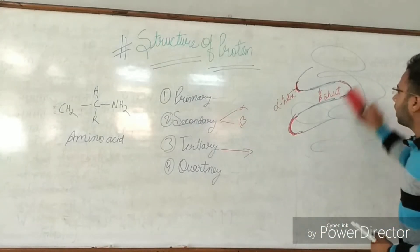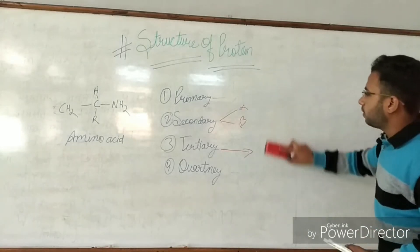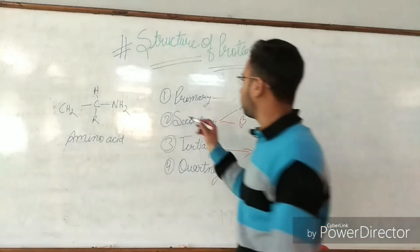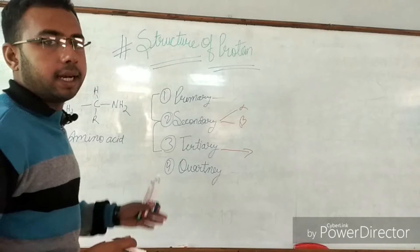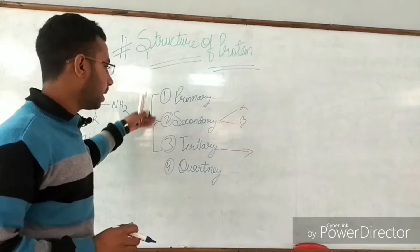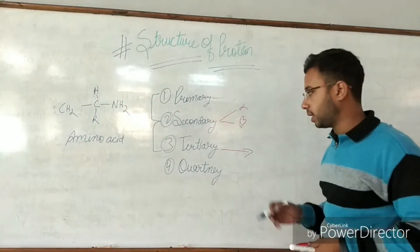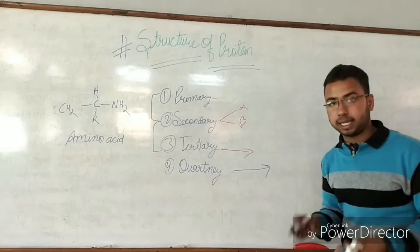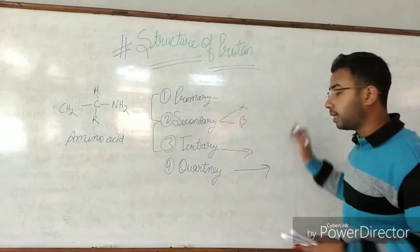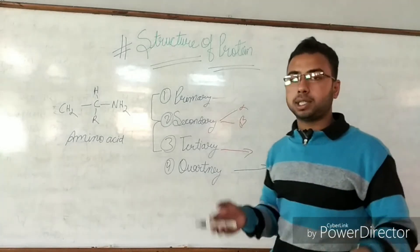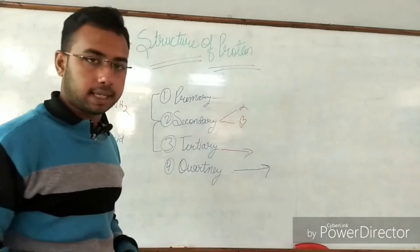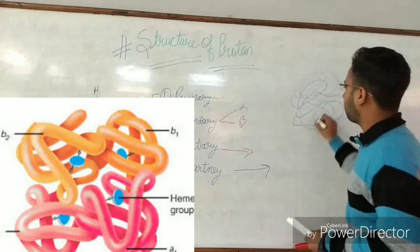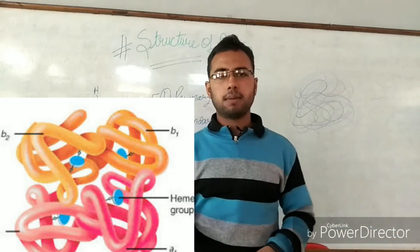Moving on to the quaternary structure, which is more and more complicated than the tertiary structure. If a protein contains primary, secondary, and tertiary structures, we can call it a protein — quaternary is not always necessary. The quaternary structure consists of two or three chains of tertiary structures combined together, making it more densely complicated. You can see the diagram on screen.